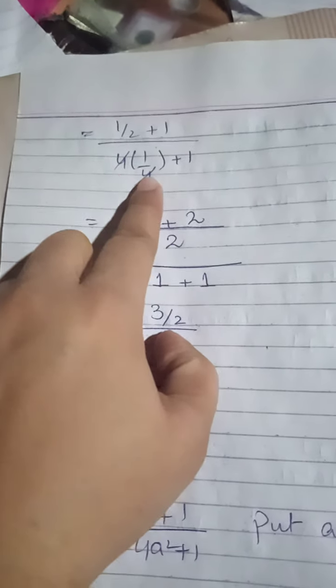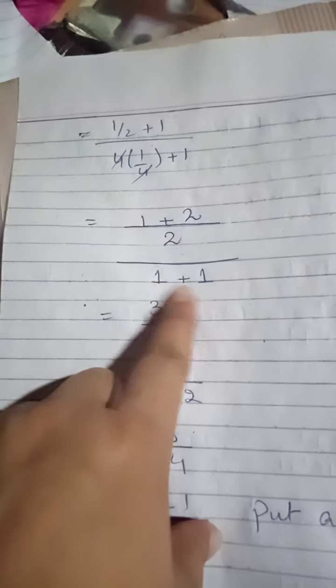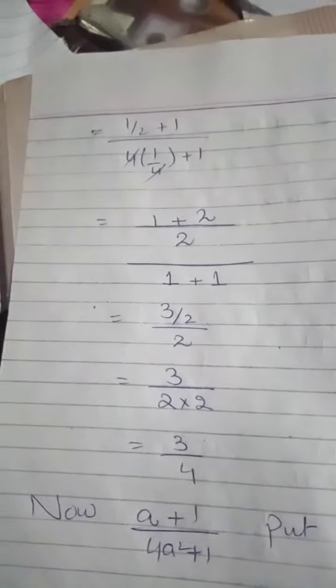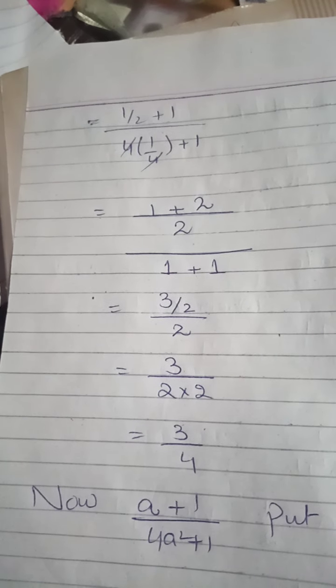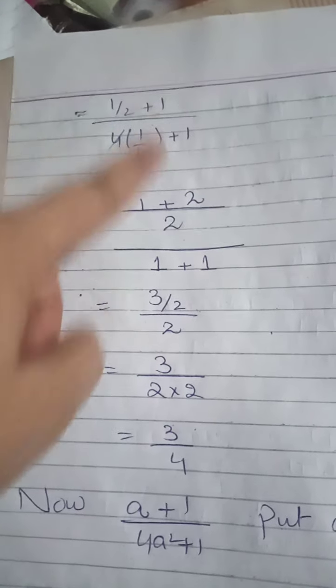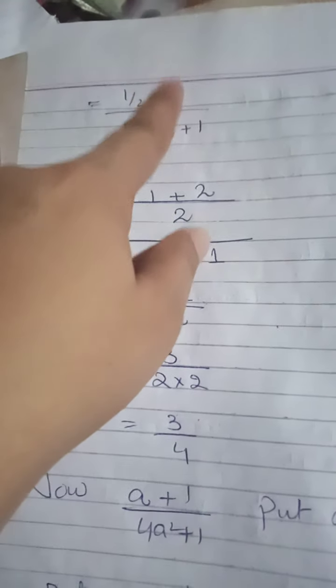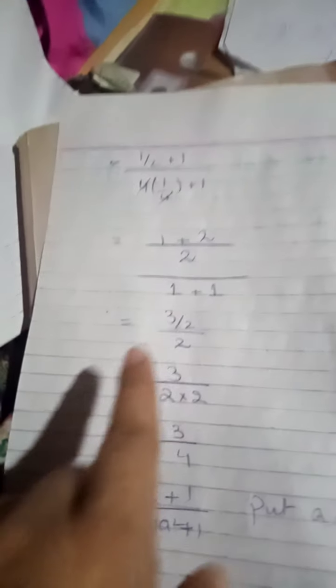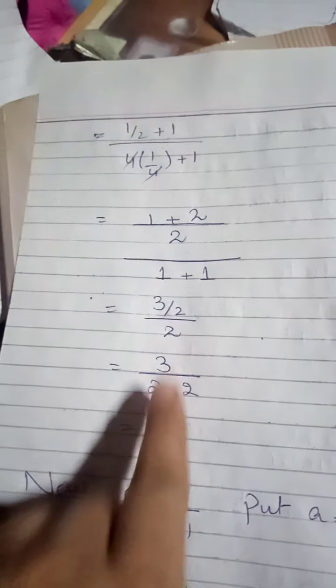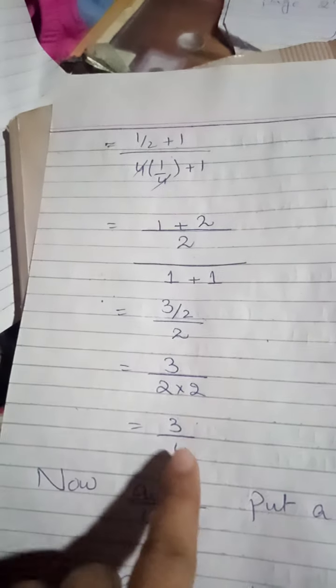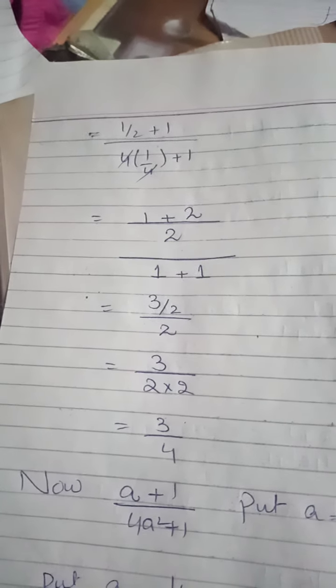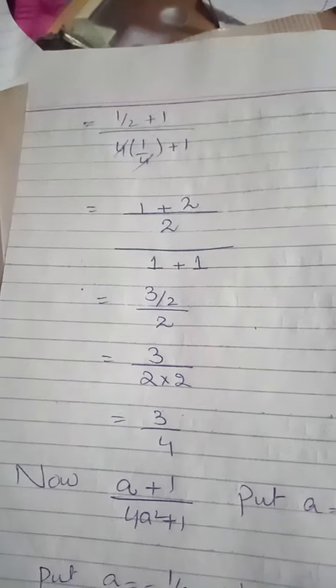Square open कर लिए। अब आगे देखें: 1 by 2 plus 1, 4 into 1 by 4 plus 1 — अब देखो 4 और 4 आपस में cancel out हो रहे हैं। नीचे में पास आएगा 1 plus 1, ऊपर 1 by 2। Numerator में 1 by 2 plus 1 — इनको हम add करेंगे, LCM लेंगे 2। 1 plus 2 आपके पास आएगा 3 divided by 2, and denominator में 1 plus 1 = 2। यह 2 and यह 2 — 3 divided by 2 into 2 = 3 by 4। जब A की value 1 by 2 put की, answer आया 3 by 4।